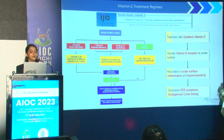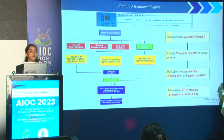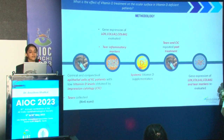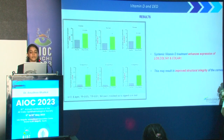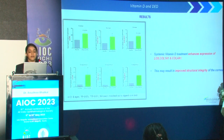In a recent publication we published our treatment algorithm. In severe deficiency — that is, less than 10 nanogram per ml — we give an intramuscular injection followed by oral treatment; in moderate deficiency and insufficiency we give oral supplementation. We collected epithelial cells from keratoconus patients who were vitamin D deficient and looked at gene expression of LOX, COL1A1, and COL4A1 before and after systemic vitamin D supplementation. We observed that systemic vitamin D treatment enhances expression of LOX, COL1A1, and COL4A1, which could improve the structural integrity of the cornea.